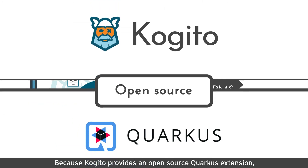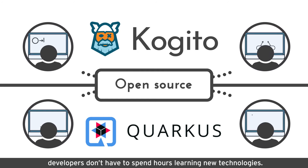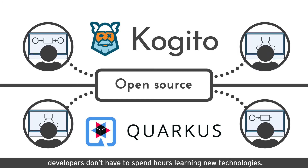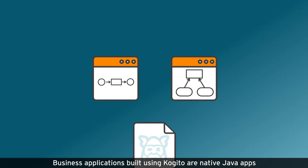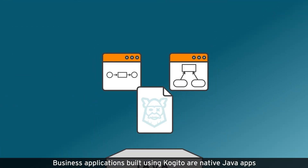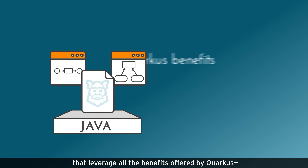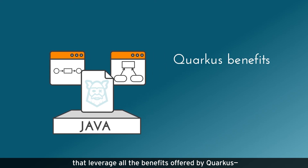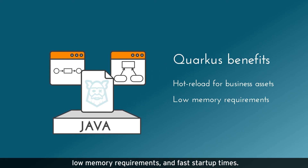Because Cogito provides an open-source Quarkus extension, developers don't have to spend hours learning new technologies. Business applications built using Cogito are native Java apps that leverage all the benefits offered by Quarkus, including hot reload for business assets, low memory requirements, and fast startup times.